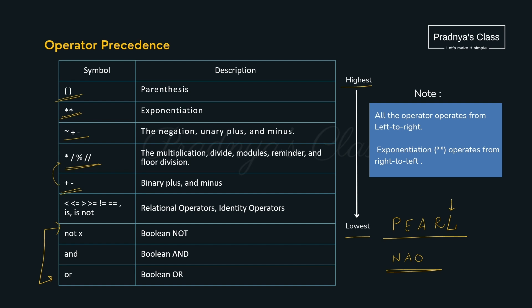Now there is one more catch. What if we have one expression with operators from the same level? For example, X plus Y minus Z — there are two operators of the same category, so which one gets evaluated first? In that case we follow the rule of associativity, which says operators will execute from left to right when they have the same level of precedence. Here plus and minus have the same precedence, so X plus Y will get evaluated first. All operators follow left-to-right associativity except exponentiation, which operates from right to left.